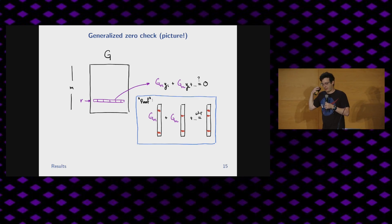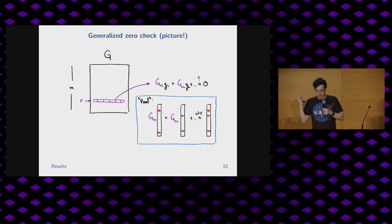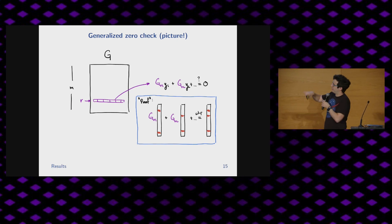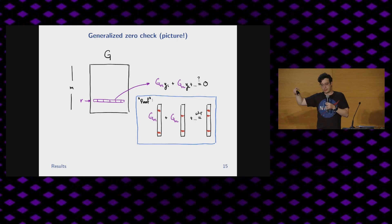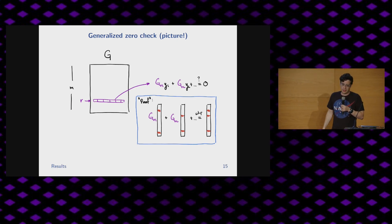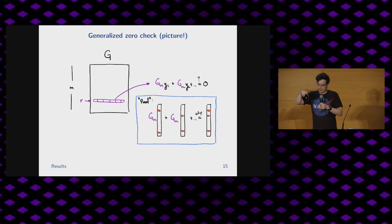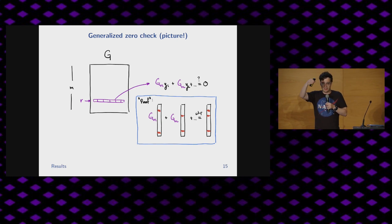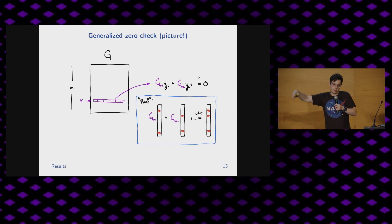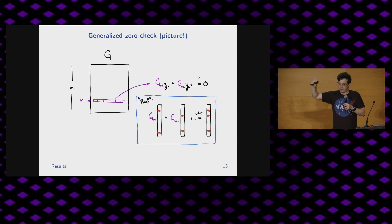The picture is: we have M rows of G, we choose a random row uniformly at random, and use that row as the coefficients of the linear combination of Y1, Y2, all the way to Yn, and then check if that's equal to zero. The high-level proof says: if I take a linear combination of a bunch of non-zero things, then with high probability the places that are non-zero are going to be kept in the final vector, from the definition of distance.